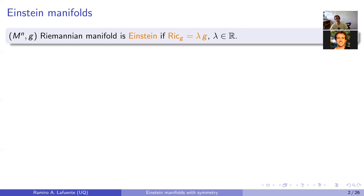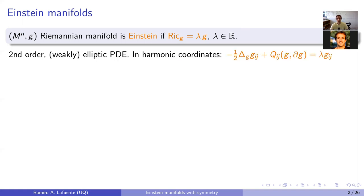Of course this condition is stronger than saying that the manifold has constant scalar curvature, but it is much weaker than asking for constant sectional curvature. From the analytic point of view, this is a very complicated second-order weakly elliptic PDE — weakly elliptic because it's invariant under the diffeomorphism group.